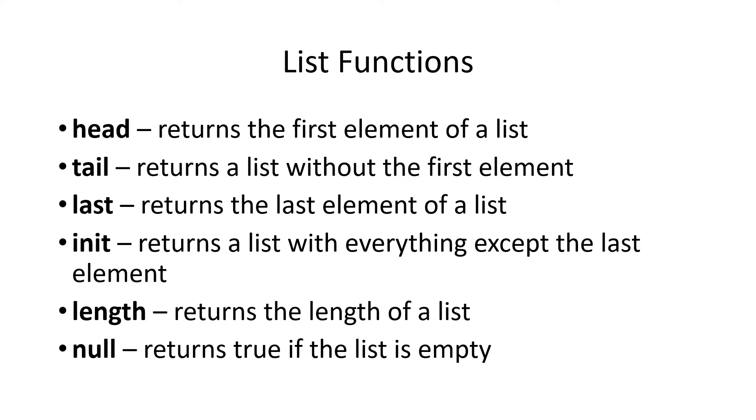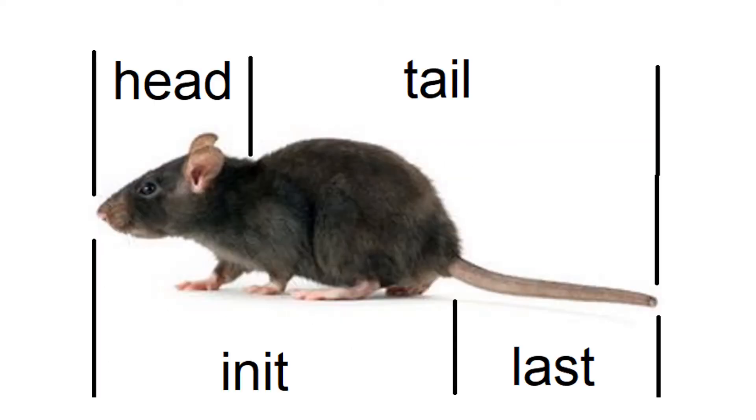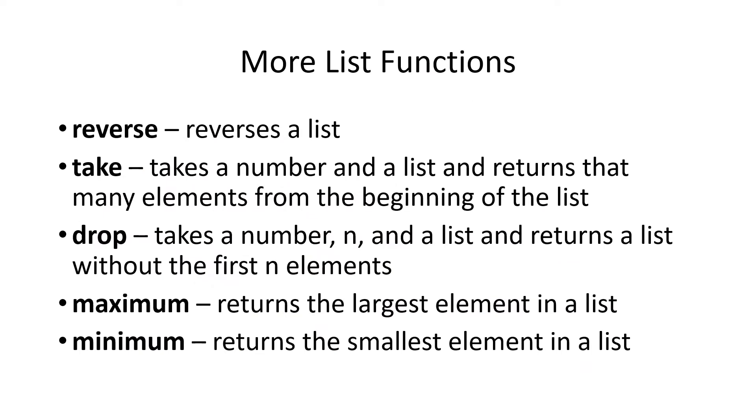Null is very useful. Null returns true if the list is empty. That's really useful in recursion. The header list is the first element. The tail is everything else. Init is everything but the last element.